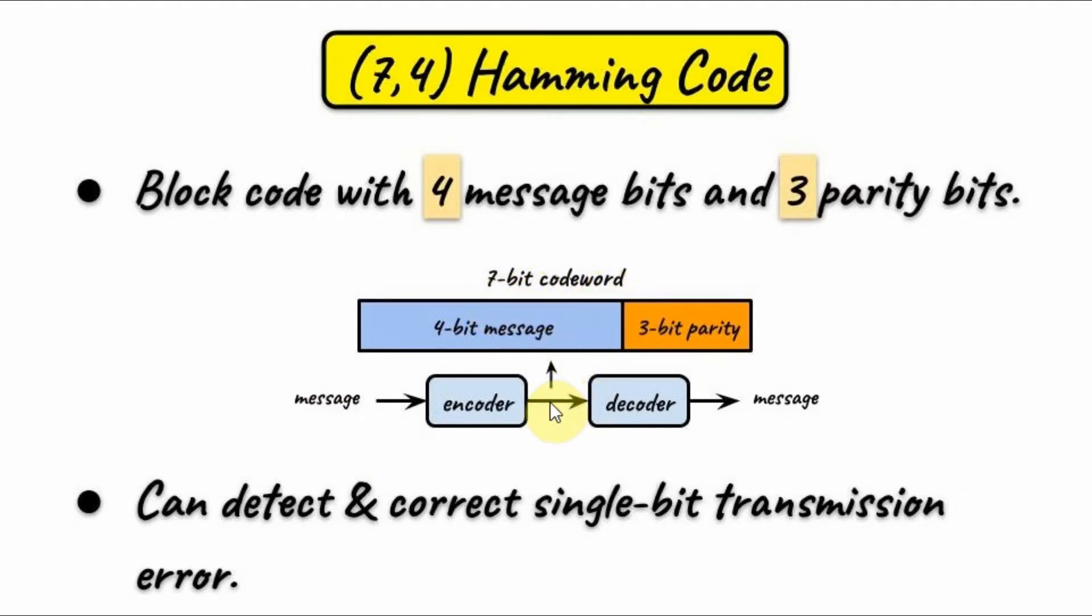This codeword is then transmitted over a noisy channel, and at the receiver side, the decoder will use the 3-bit parity information to determine whether an error has occurred. If a single error has occurred, then the decoder can detect the error and correct it, and then extract the message.